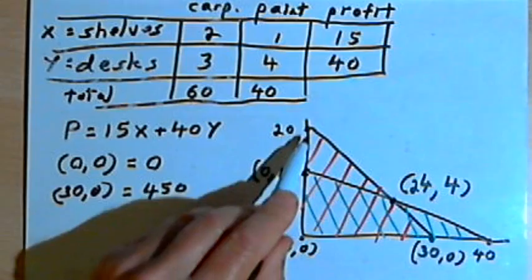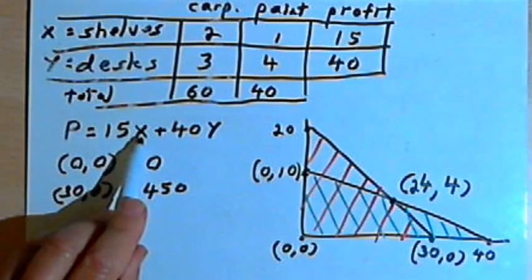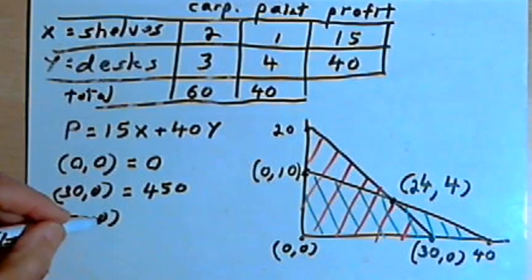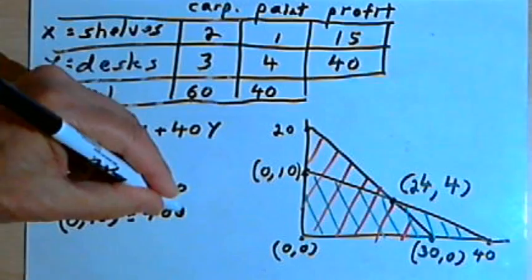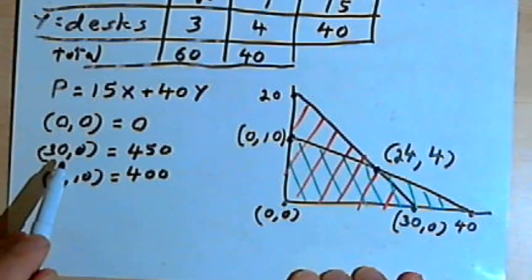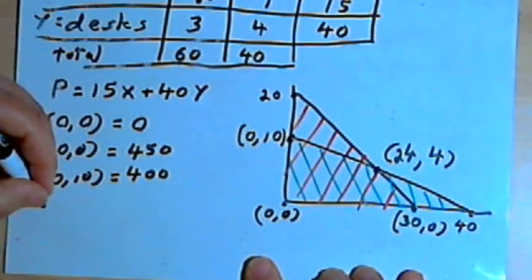If all they do is make desks, that's this point here on the y-axis, they don't make any profit from shelves, so it's 15 times zero. Let's put those coordinates in, zero and 10. But they make 10 desks, $40 for each desk, so they make a profit of $400. So far, it looks like their best bet would be to make 30 shelves and no desks.